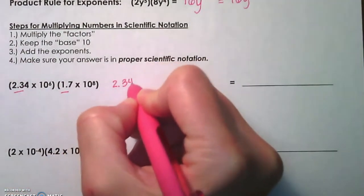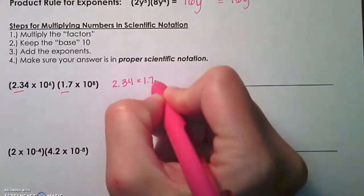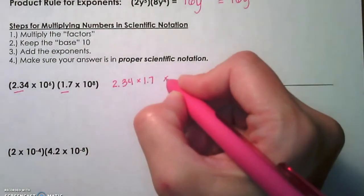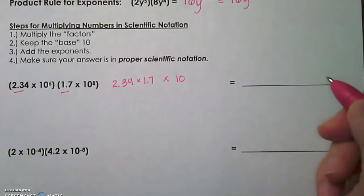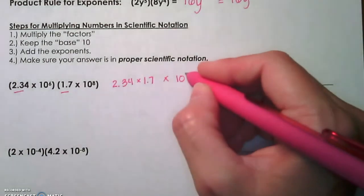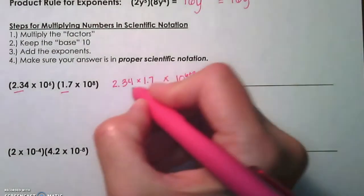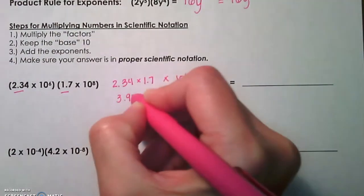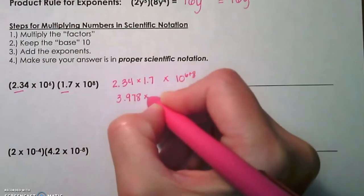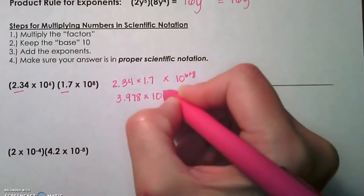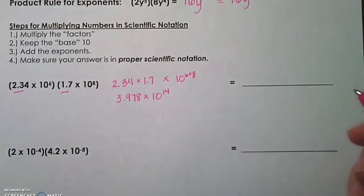So 2.34 times 1.7, you're going to keep that base of 10, and then you add the exponents of 6 plus 8. The 2.34 times 1.7 gives us 3.978. We keep our 10 and add our exponents, which gives us 10 to the 14th.